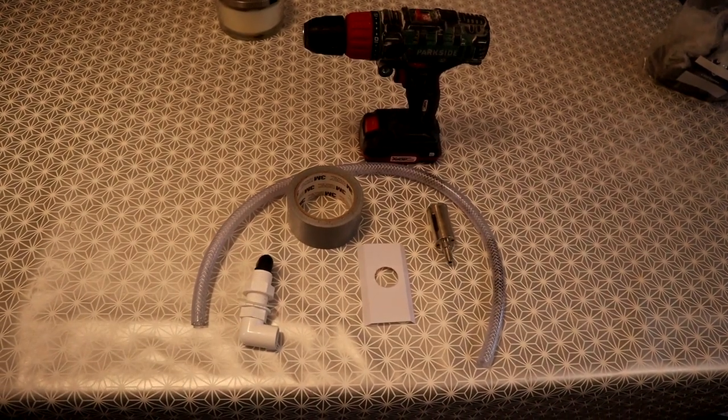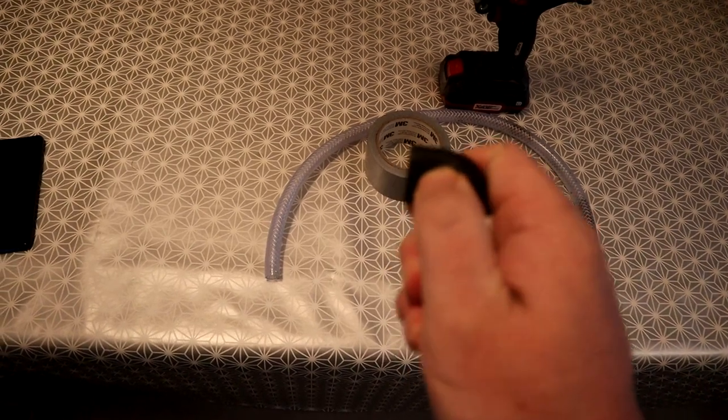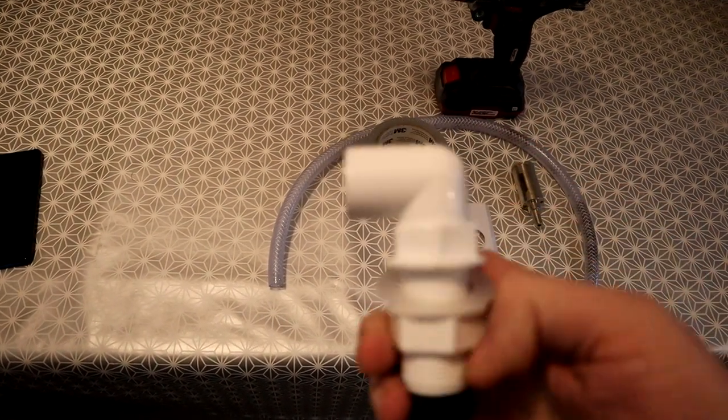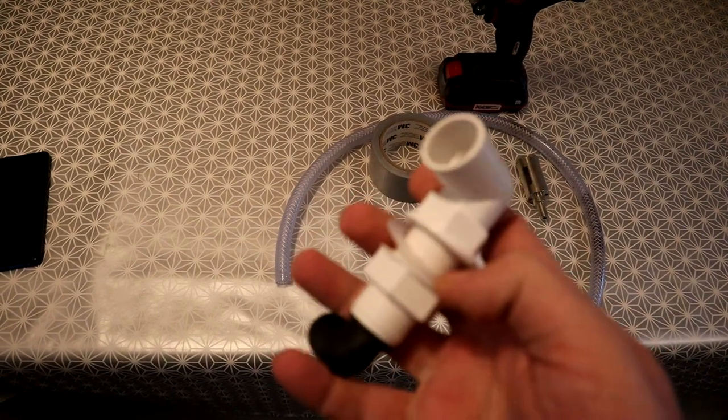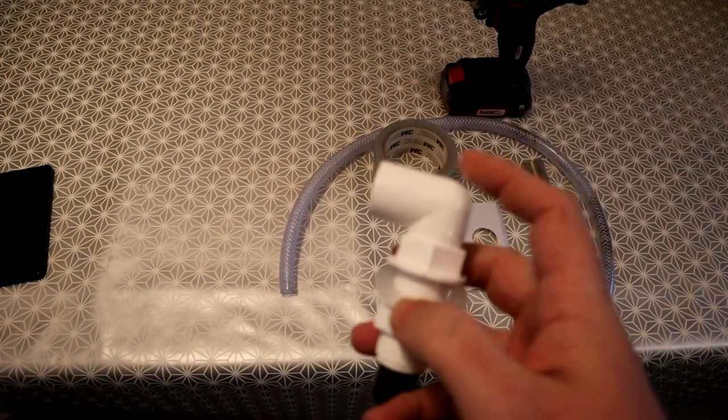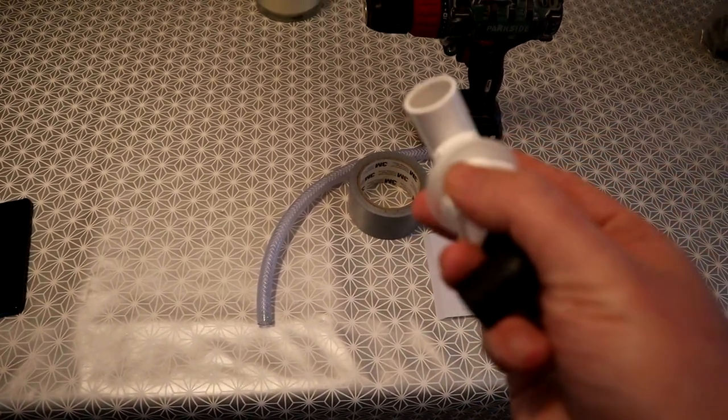I've laid out what I need. These are the bits and bobs. We've got the overflow itself, so this is called a tank connector. It's from B&Q. You can buy proper ones on Amazon and things like that, but this is going to be just fine for me. This is the bit that goes inside the tank, and the reason I use this is because I can use it to set the water level.